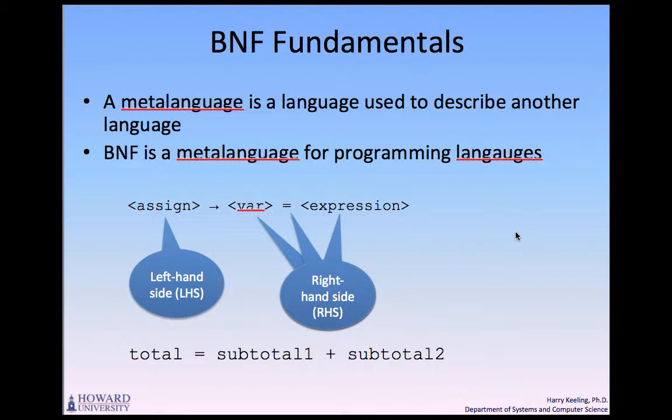In the example rule shown, the abstractions var and expression obviously must be defined by the assign definition to be useful to the language. This particular rule specifies that the abstraction assign is defined as an instance of the abstraction var, followed by the lexem equal, followed by an instance of the abstraction expression. One example sentence for this rule is: total equals subtotal plus subtotal two.